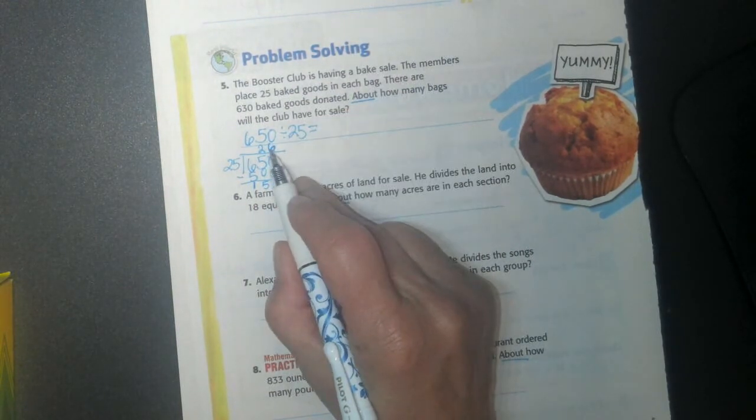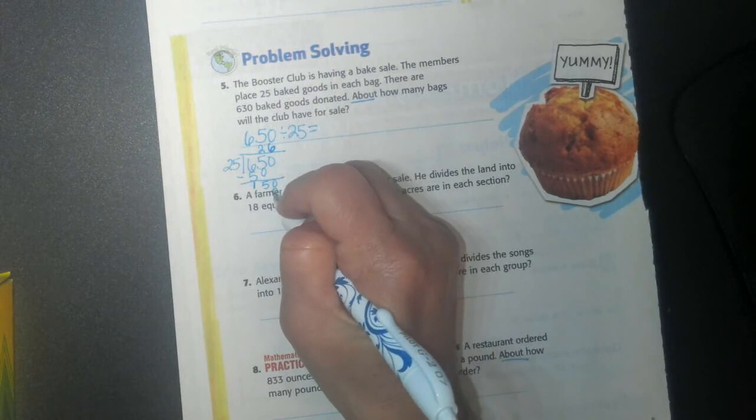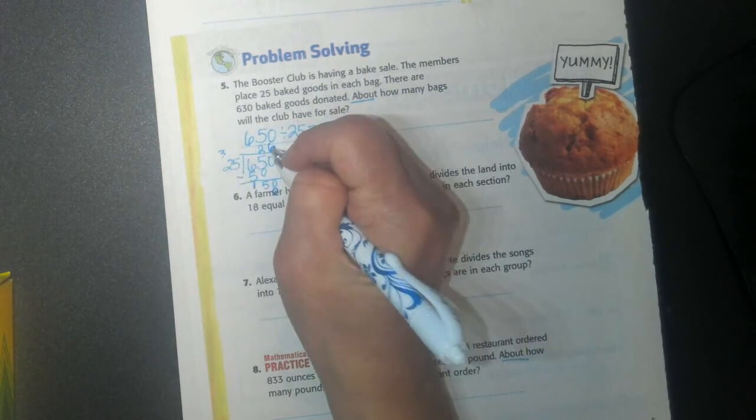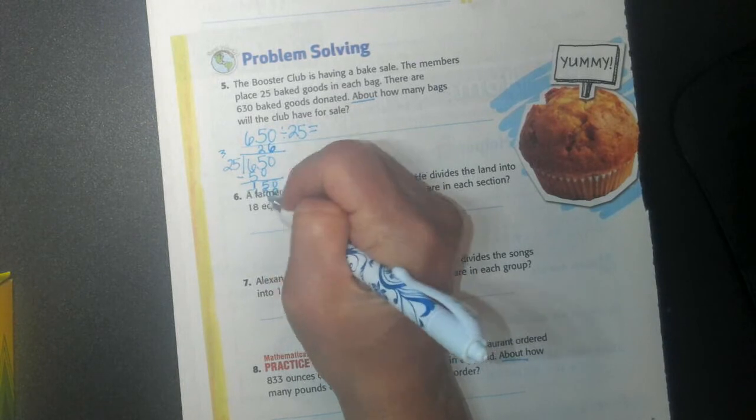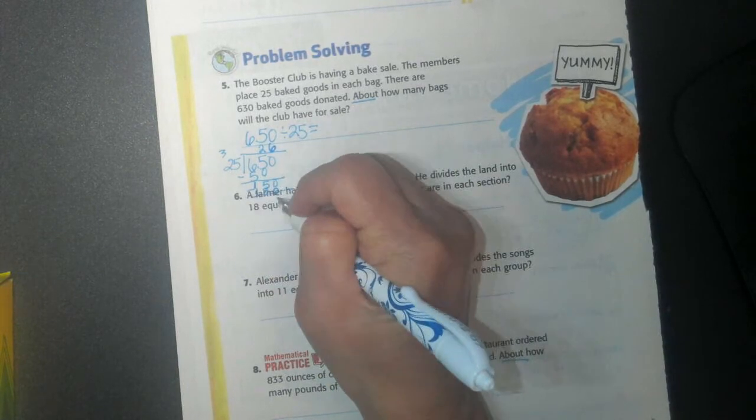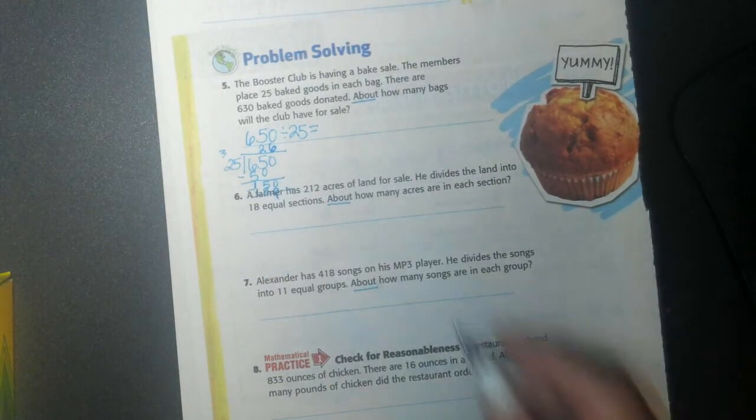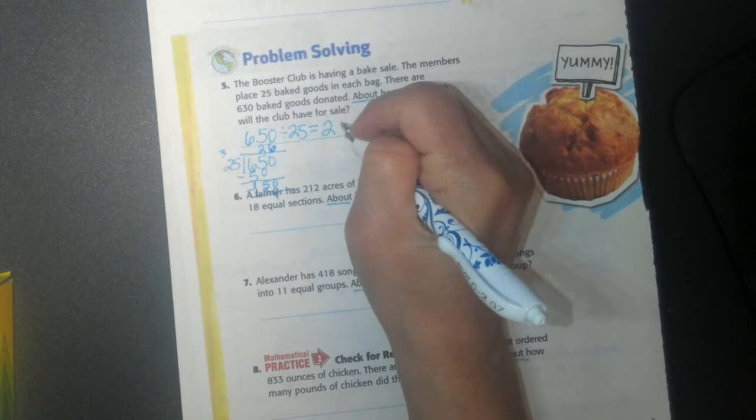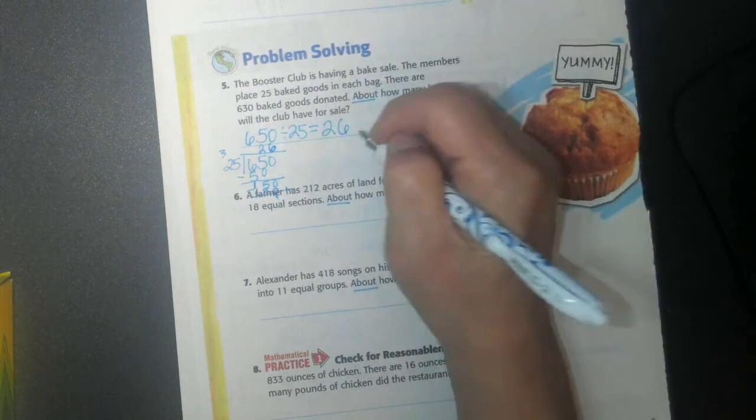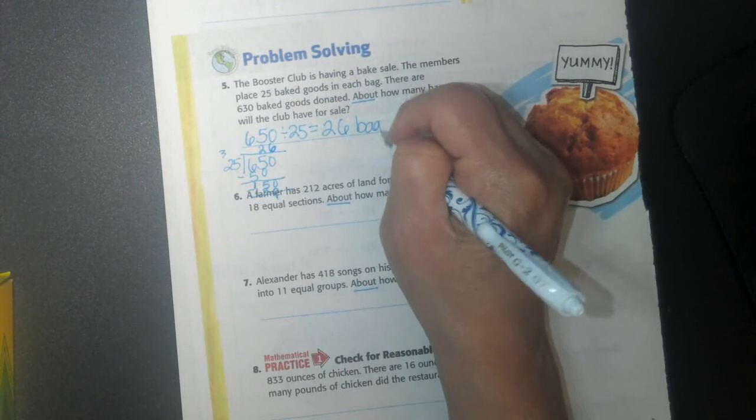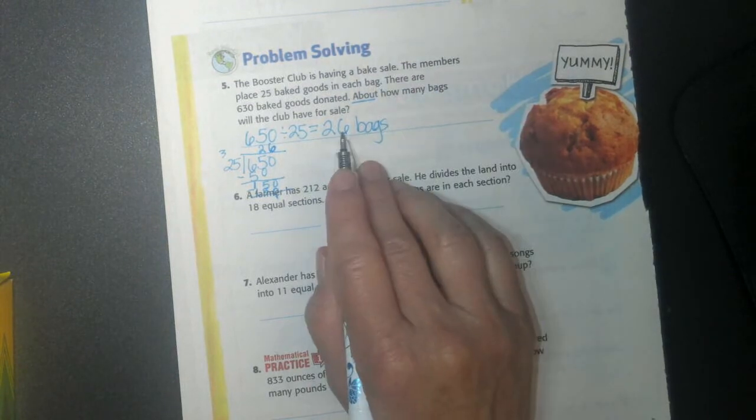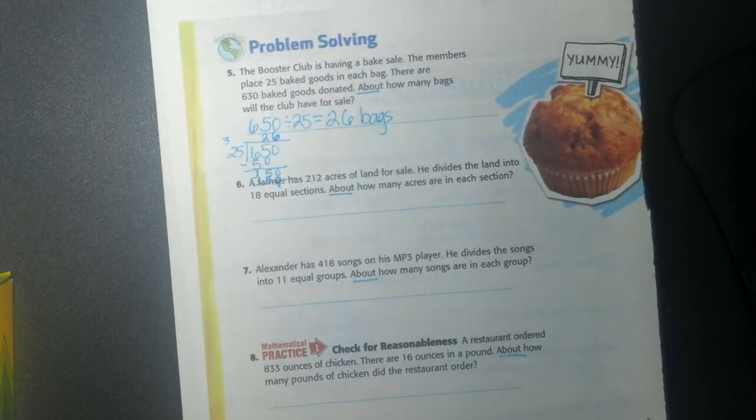I'm going to double check. 6 times 5 is 30. I'll carry my 3. 6 times 2 is 12 plus 3 is 15. I subtract. I get 0. I wrote all over my other problem. Sorry. So 26 bags.